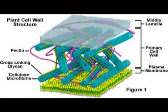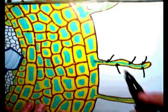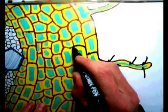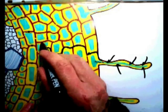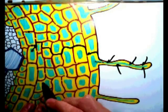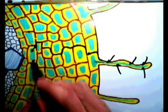The first pathway is the apoplastic pathway. 'Apo' means away from the cytoplasm, and 'plast' means structure or form. The plant cell wall consists of pectin, cross-linking glycans, cellulose microfibrils, middle lamella, primary cell wall, and plasma membrane. Since it contains many spaces, water moves through the cell wall from one cell to another and at last reaches the endodermis. This pathway is called the apoplastic pathway.